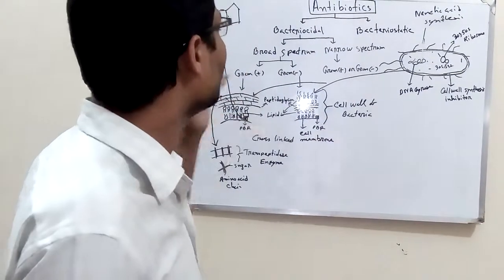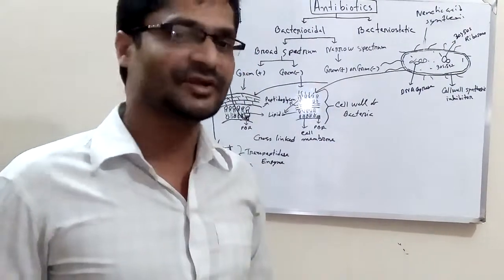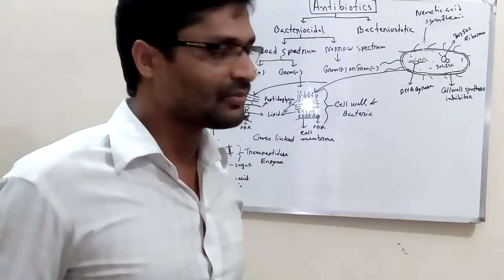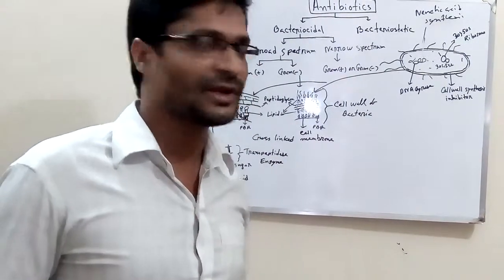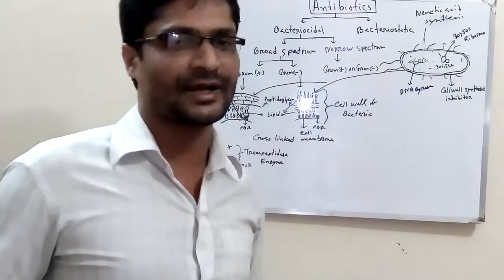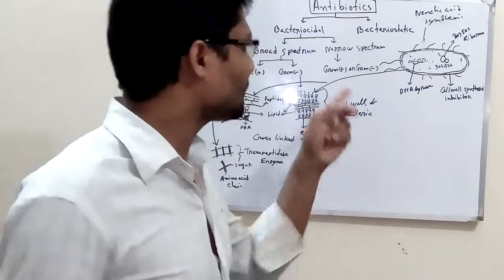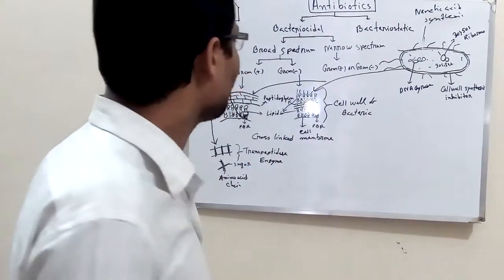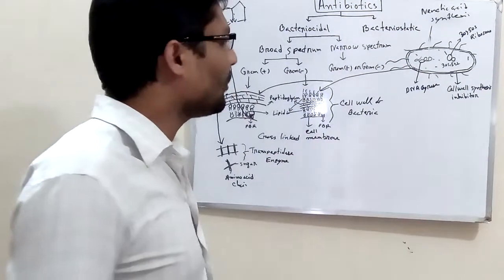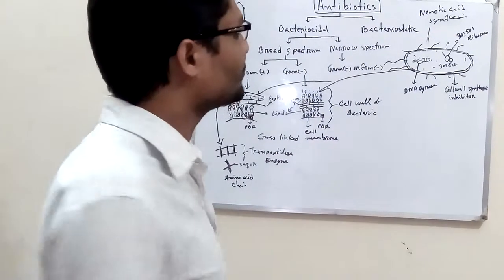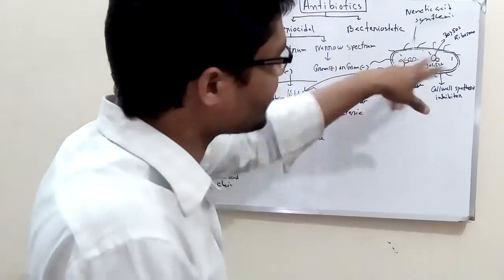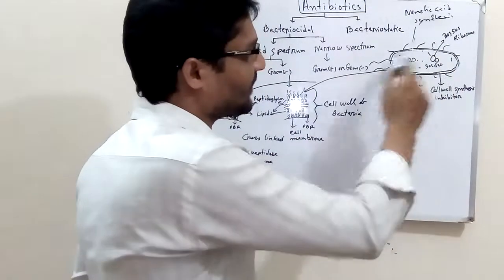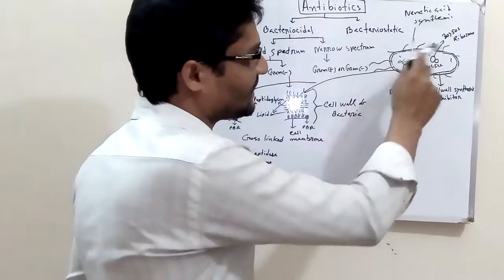Gram-positive and gram-negative bacteria differ in spectrum coverage. Broad spectrum antibiotics are active against both gram-positive and gram-negative bacteria, while narrow spectrum antibiotics are active against only one group. Looking at pictures, we can examine bacterial structures including flagella and cell components.